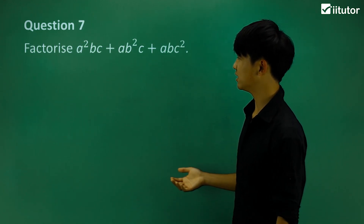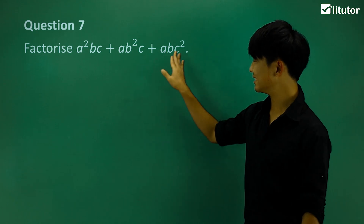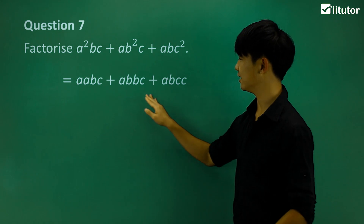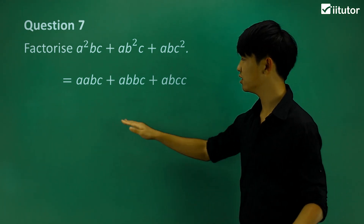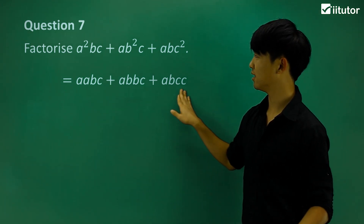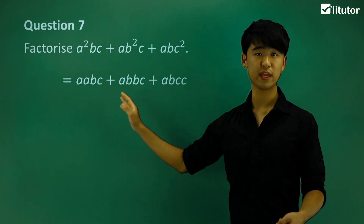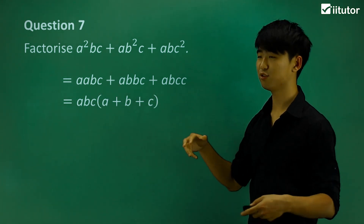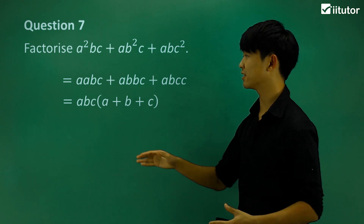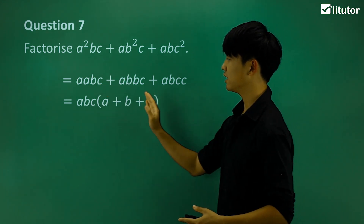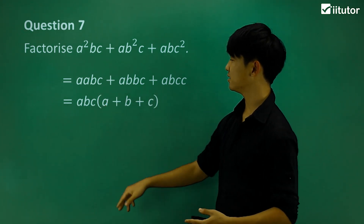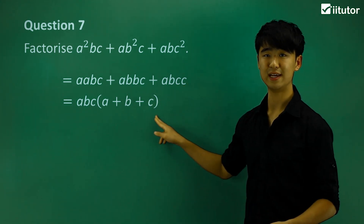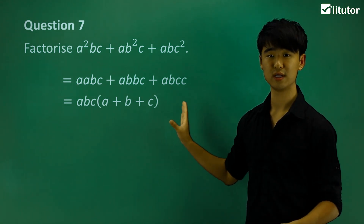Question 7 has a lot of ABCs. A nice way to approach it is to write out all the factors. Looking at what they all have in common — they all have ABCs. ABC is the greatest common factor they all contain. Take ABC out of the first term, we're left with one A. Take ABC out of the second term, we're left with one B. Same for the third, we're left with one C. So the factorized version is ABC bracket A plus B plus C bracket.